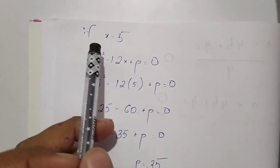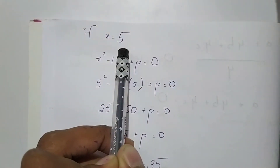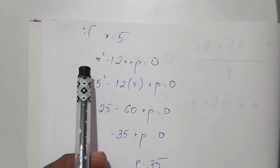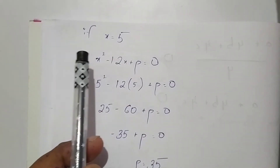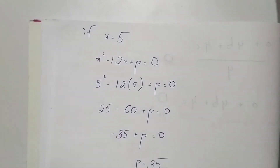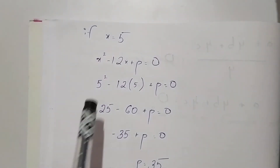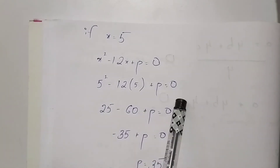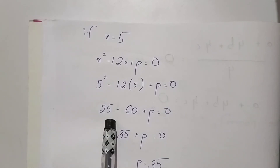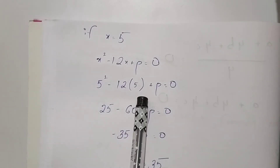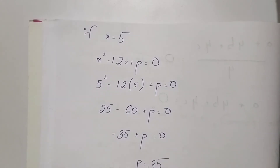When we put the value of x as 5 in the second equation x squared minus 12x plus b equals zero, we get 5 squared minus 12 into 5 plus b equals zero. From this we get 25 minus 60 plus b equals zero, so 25 minus 60 gives minus 35 plus b equals zero.